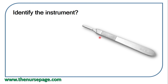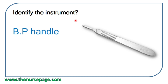Next question: identify the instrument. This is a BP handle used to attach a surgical blade. After attaching the surgical blade to the BP handle, it is used to make incisions.